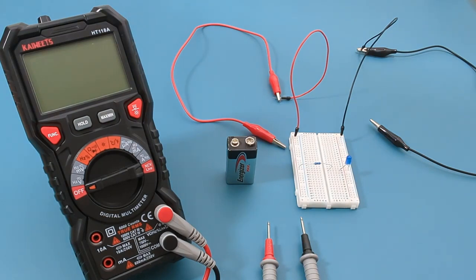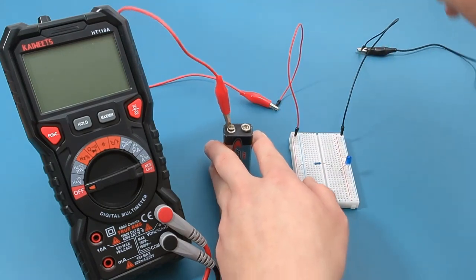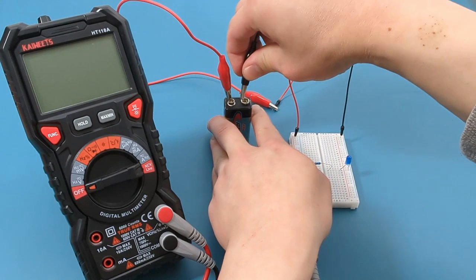Connect the red alligator clip to the positive terminal of the battery. Connect the black alligator clip to the negative terminal of the battery.